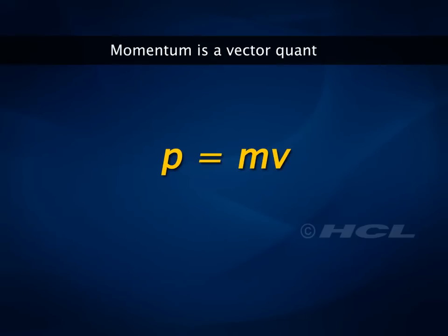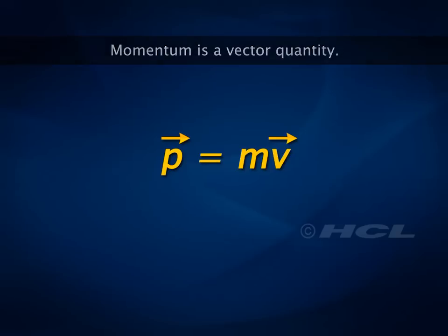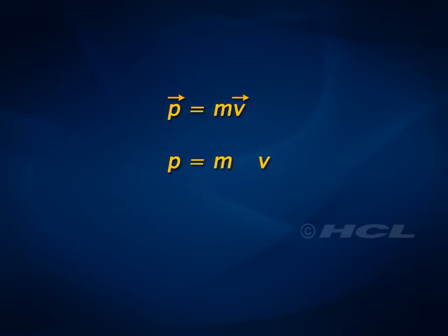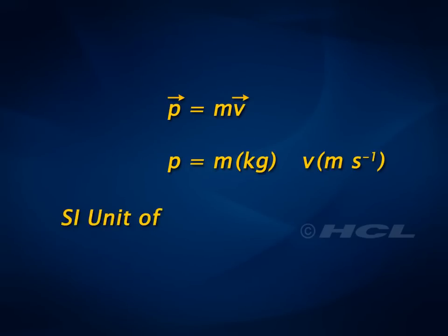Momentum is a vector quantity. It has both magnitude and direction. Its direction is the same as that of the velocity of the object.